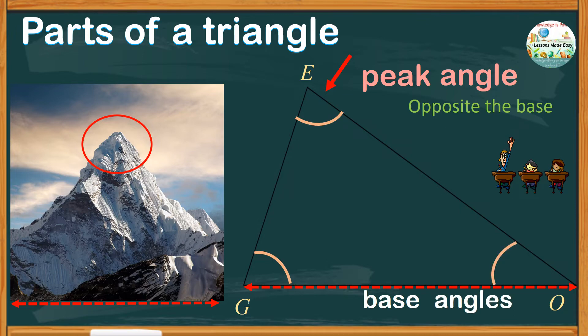And the line segment from the peak that is perpendicular to the base, let's say point P, let's have it here, this is called the height or altitude.